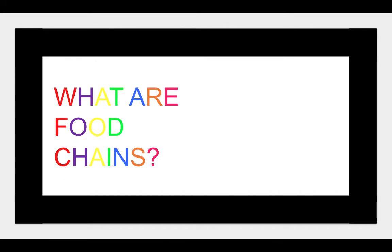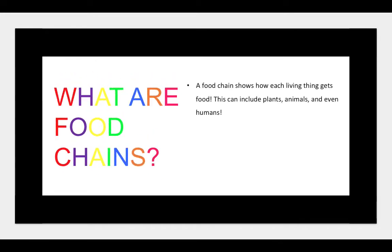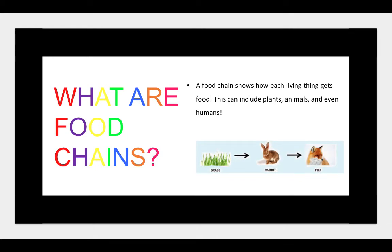So what are food chains? A food chain shows how each living thing gets food. This can include plants, animals, and even humans. Animals living in the same habitat depend on each other for food. We write down which animals eat what by using a food chain. Most food chains begin with plants because they don't depend on anything but themselves to make their own food.